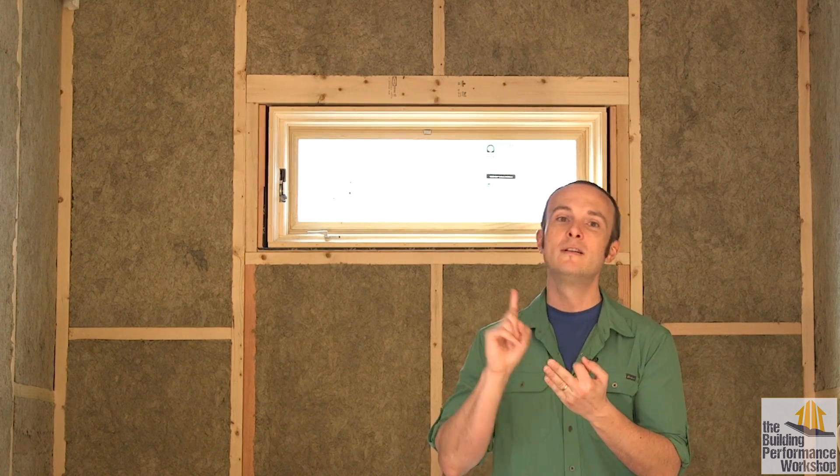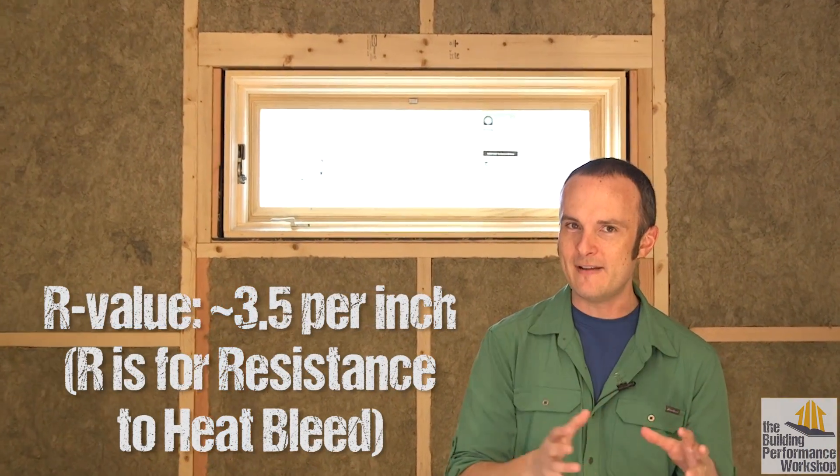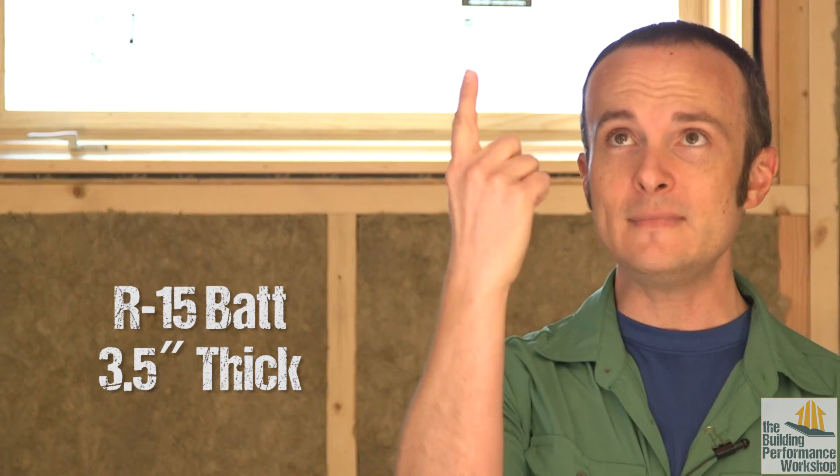Fibrous insulation can include anything made up of fibers: mineral wool, rock wool, fiberglass, cellulose, sheep's wool, hemp, denim. The insulation value of those is going to be about R3.5 to R4 per inch. In this case, we've got two-by-four cavities, which means we have an R15 in the walls around me and in the ceiling. That's a pretty good insulation value, and we know that's optimum because we ran an energy model.